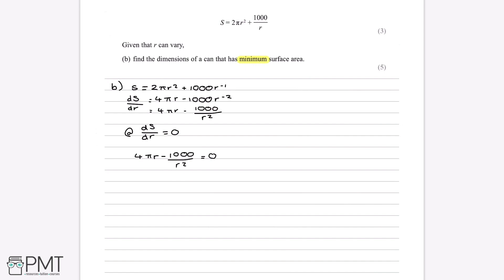To eliminate the r² denominator, multiply everything through by r², giving 4πr³ − 1000 = 0. Rearranging: add 1000 to both sides and divide by 4π to get r³ = 1000/(4π). Cube-rooting this gives r = 4.30 centimetres to three significant figures.